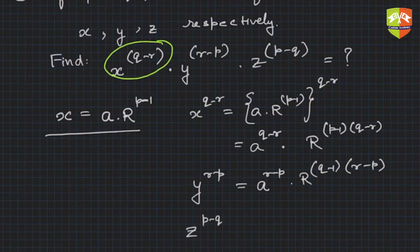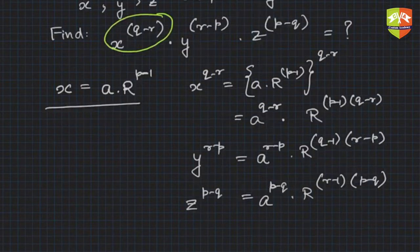z to the power (p minus q) is a to the power (p minus q) into capital R to the power (r minus 1)(p minus q).